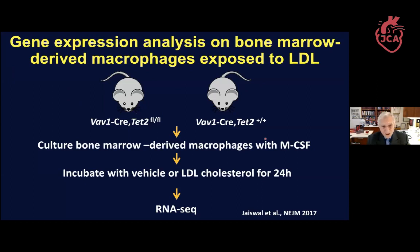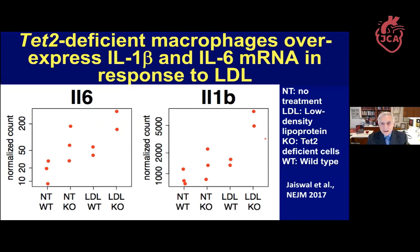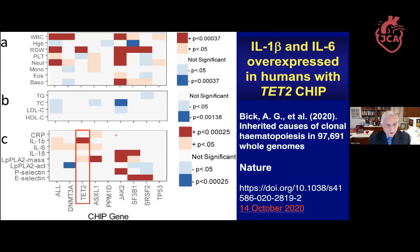Once you've made these animals, you can make monocyte-derived macrophages, expose them to traditional risk factors such as LDL cholesterol, and perform RNA sequencing. When we did that with Sid, we found our frenemies — IL-1-beta and right downstream of it, IL-6 — overexpressed by these mutant leukocytes.